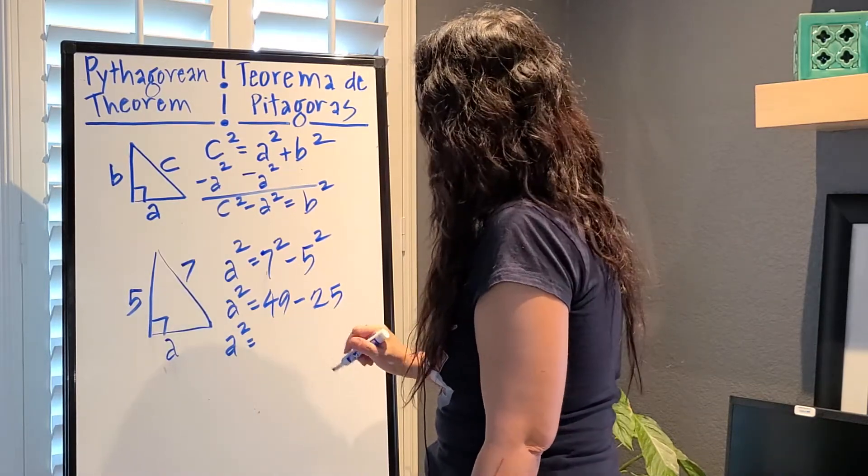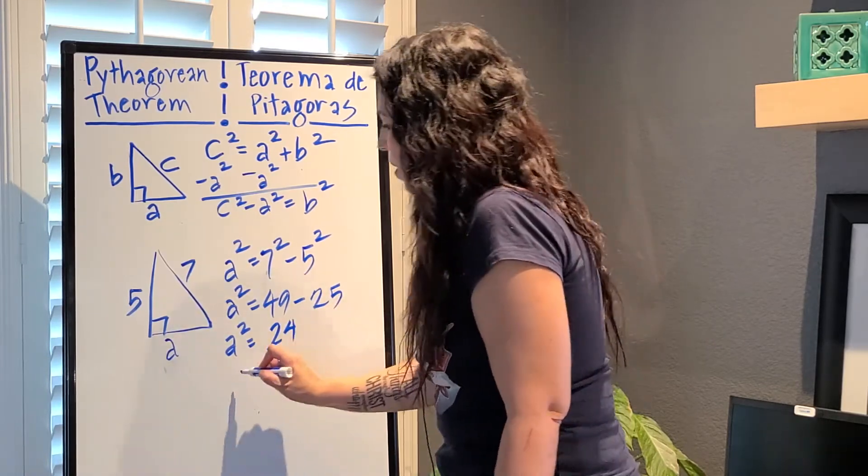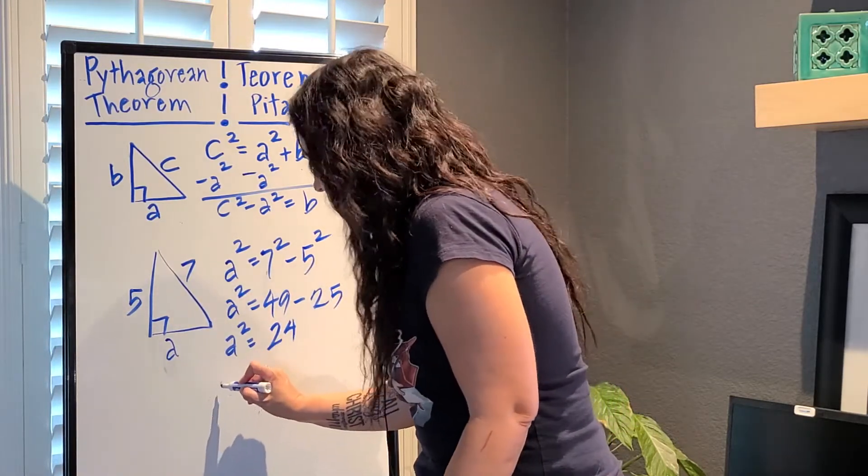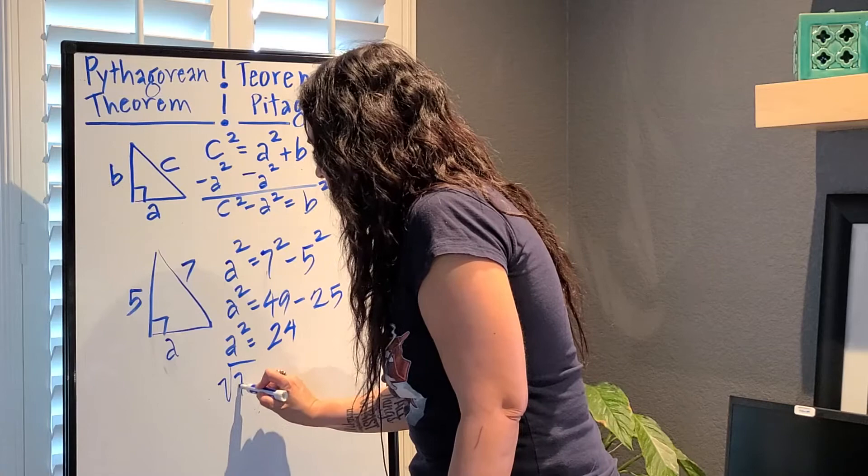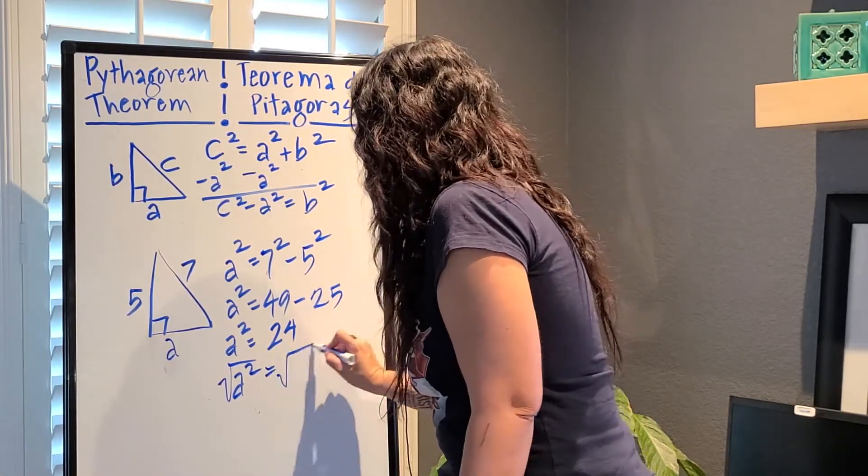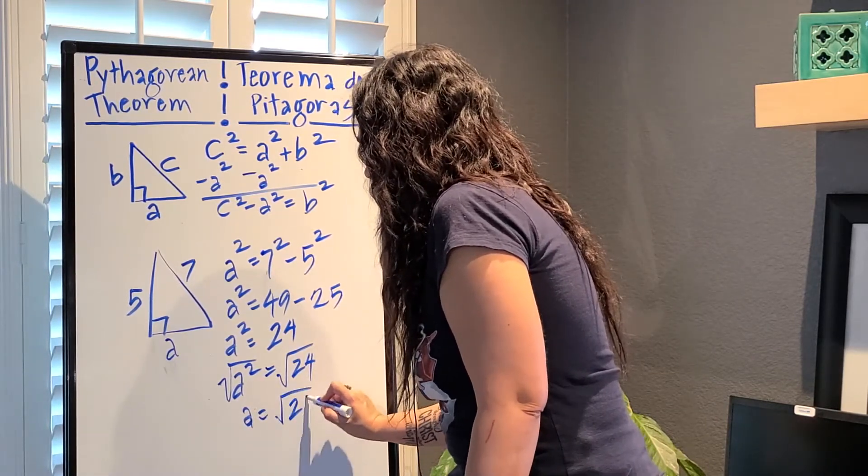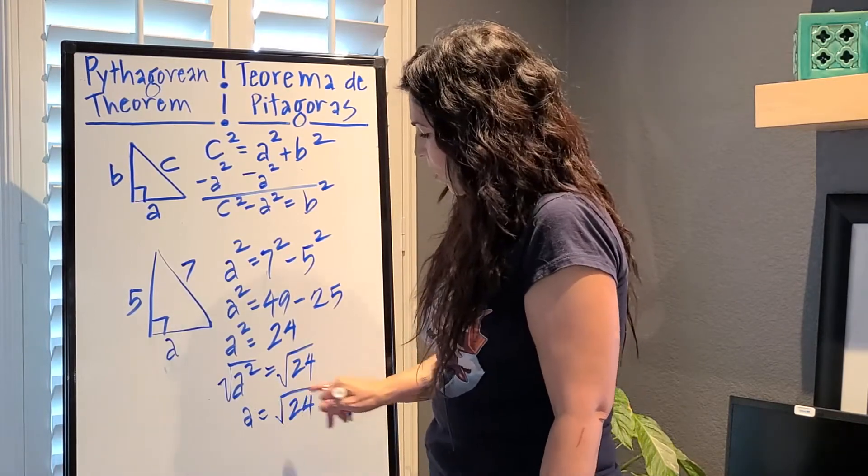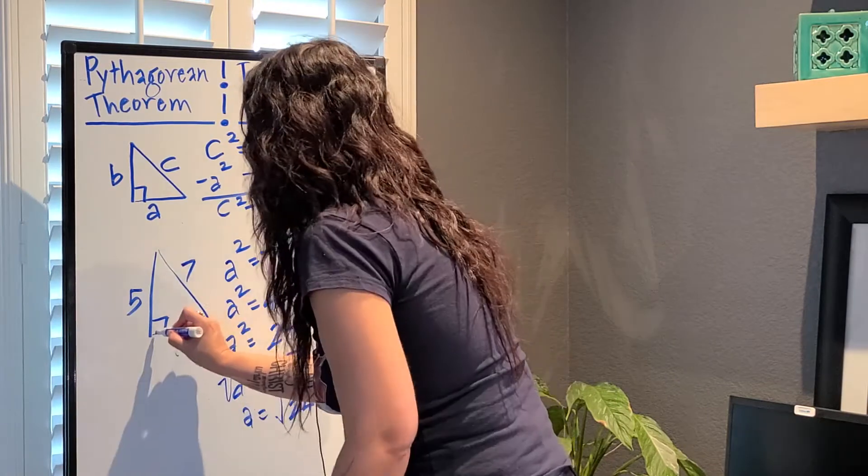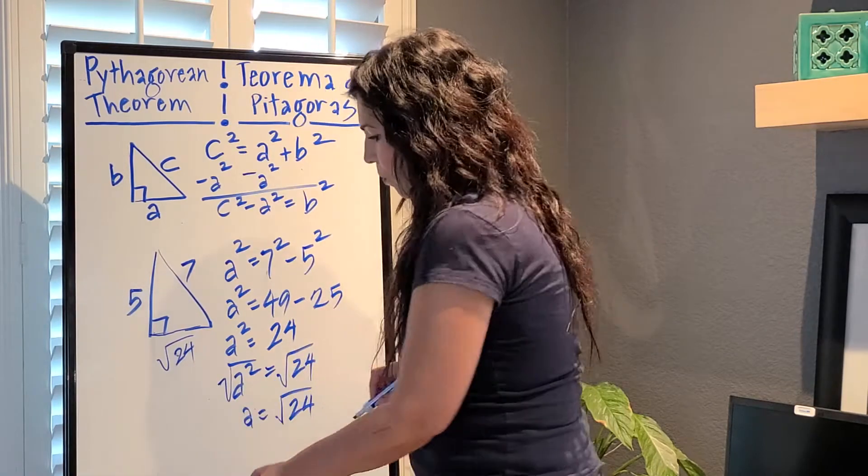So A squared, 49 minus 25 is, what, 24. Vale 24. Y en vez de cambiarlo a un decimal, lo voy a dejar como una raíz cuadrada. So rather than finding the actual square root as a decimal, I'm just going to leave it as a square root. Y tenemos que la A vale la raíz cuadrada de 24. So we have that A is equal to the square root of 24. And we have solved for our A.